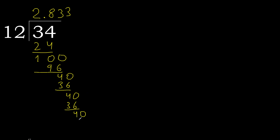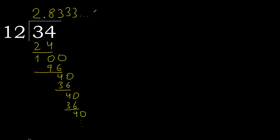Repeat — therefore repeat. Therefore 3 repeats. 34 divided by 12 is here — after the point: 3 repeat, repeat, repeat. Like this — the decimal repeats.